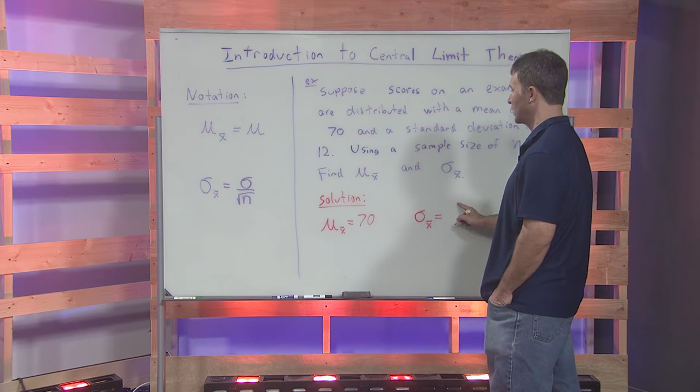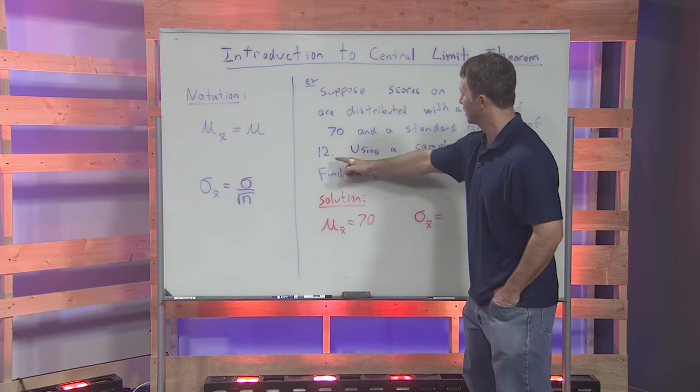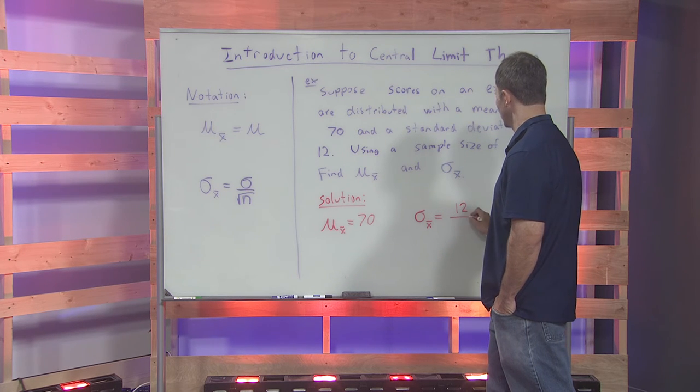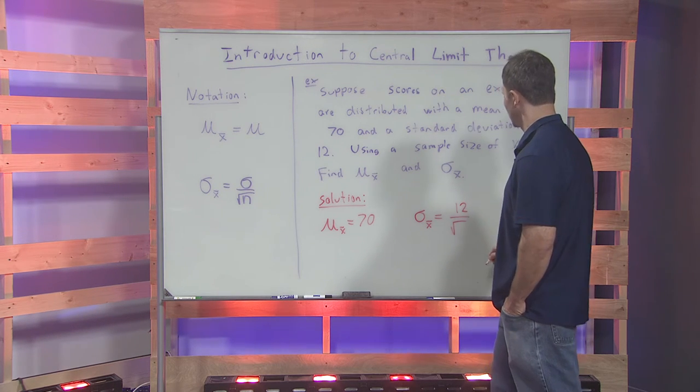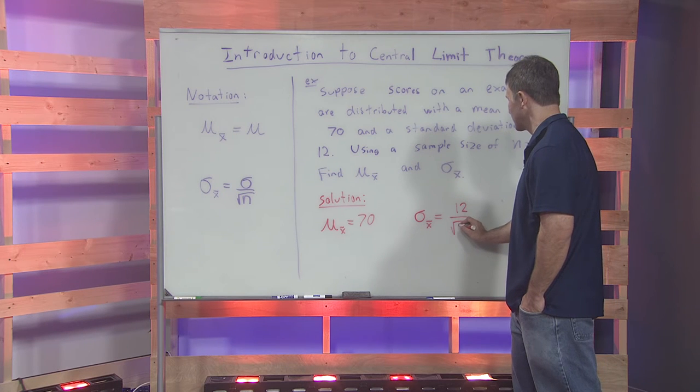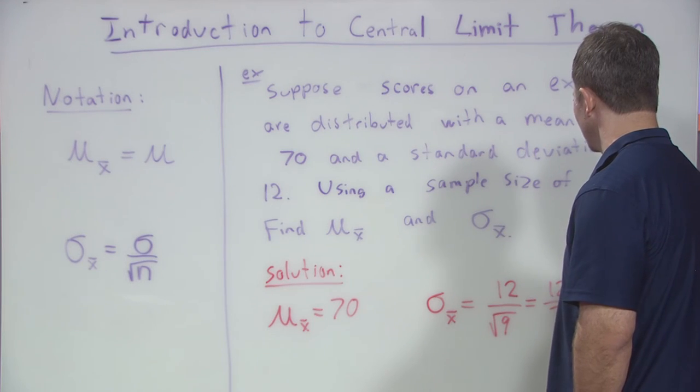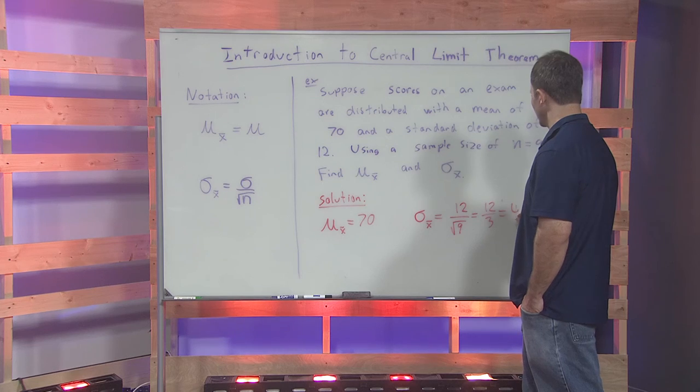The original standard deviation was 12 over square root of n, which in this case is 9. So that's going to be 12 over 3, which is 4.